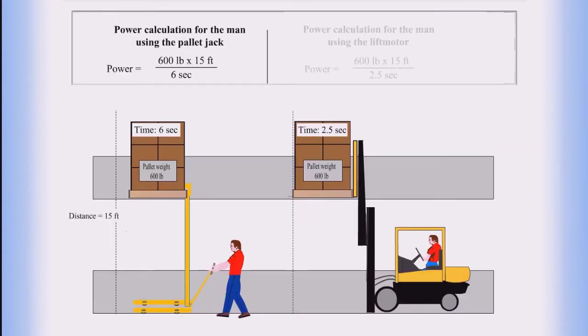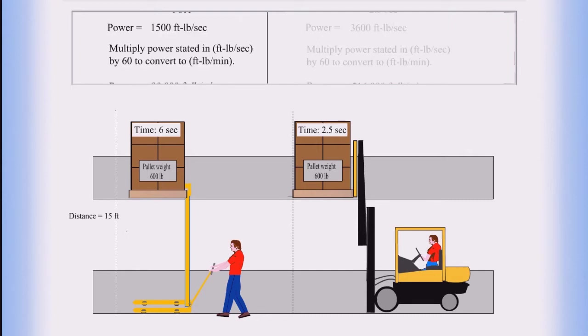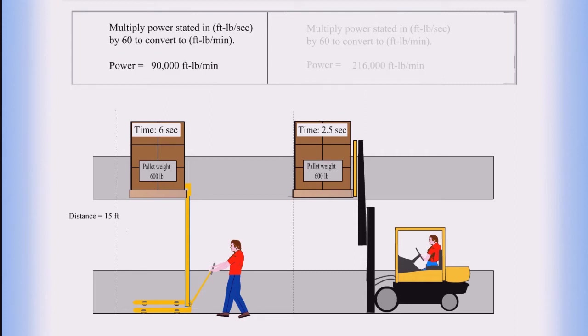The power calculation for the man using the pallet jack is power equals 600 pounds times 15 feet divided by 6 seconds, so power equals 1,500 foot-pounds per second. Multiply power stated in foot-pounds per second by 60 to convert to foot-pounds per minute. So power equals 90,000 foot-pounds per minute.